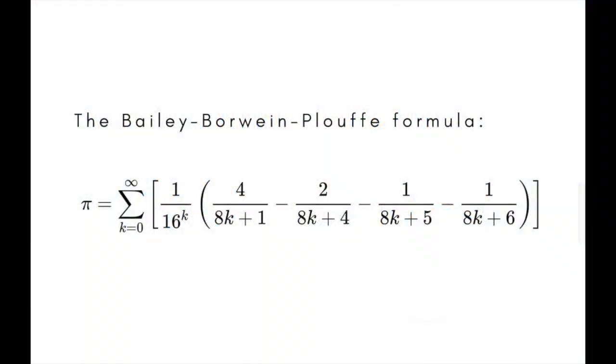As a curious aside, it's worth mentioning a discovery made by researchers David Bailey, Peter Borwein and Simon Plouffe in 1996. They found a fairly simple formula, the sum of an infinite series of terms for pi, that allows any digit of pi to be calculated without knowing any of the preceding digits.